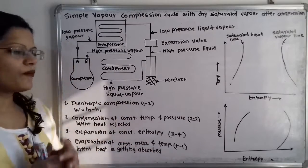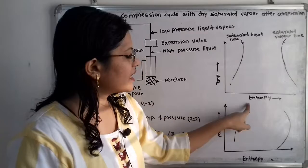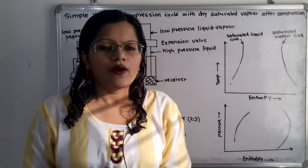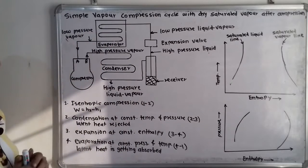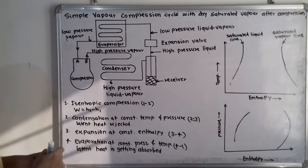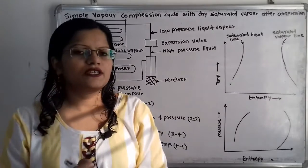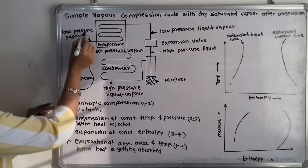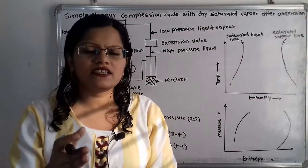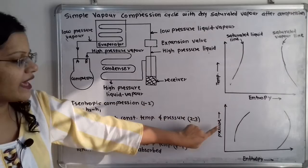Isentropic compression means the compression process takes place with constant entropy, so we draw a straight vertical line. In the compressor, low pressure vapor refrigerant from the evaporator enters and is compressed. After compression, the pressure increases, and as pressure increases, the temperature also increases.